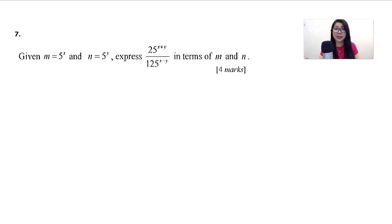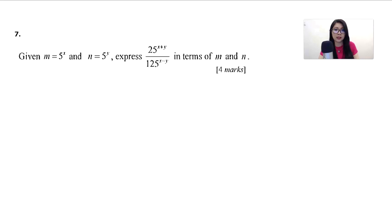Let's look at question number 7. This is under the chapter indices — chapter 5, same as question 6 — but this one doesn't involve any logarithms, just indices. Given m equals 5 to the power of x and n equals 5 to the power of y, express 25^(x+y) over 125^(x−y) in terms of m and n. This is 4 marks.